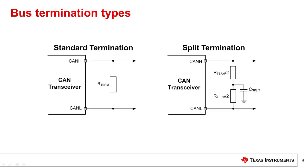The bus for CAN and CAN-FD should be properly terminated at both ends with resistors that match the impedance of the network. Proper termination helps reduce signal integrity issues like reflections. If nodes may be removed from the bus, designers must use care when choosing where to place the termination resistors.